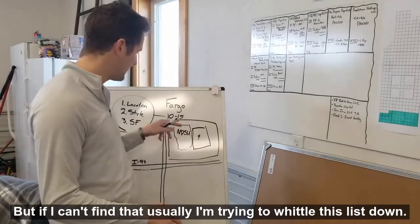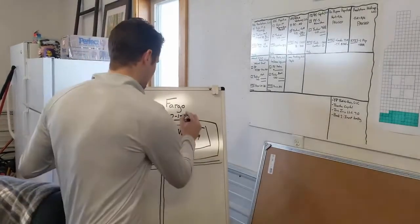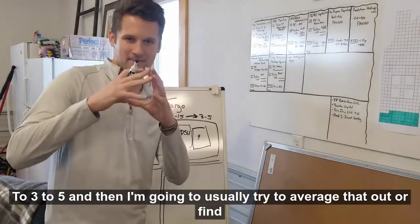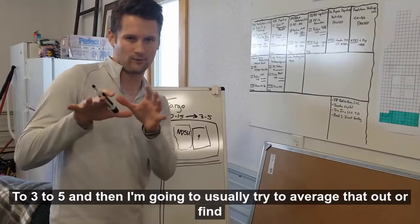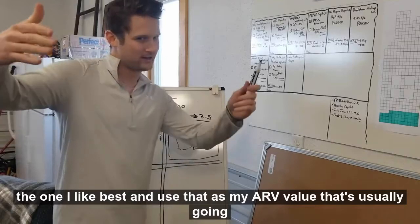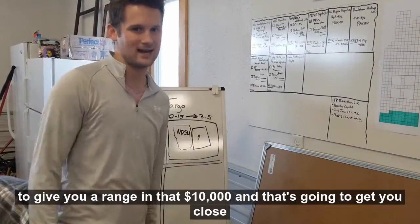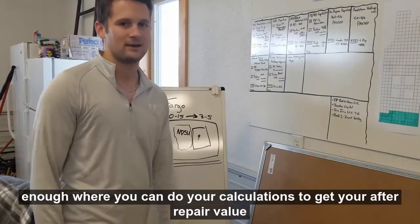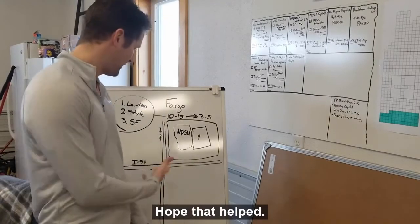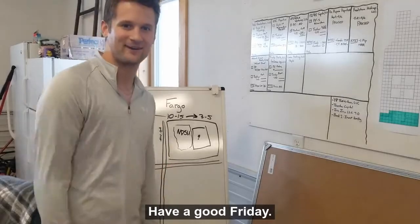But if I can't find that, usually I'm trying to whittle this list down to three to five. And then I'm going to usually try to average that out or find the one I like best and use that as my ARV value. That's usually going to give you a range in that $10,000, and that's going to get you close enough where you can do your calculations to get your after repair value with your ARV. Hope that helped, hope you like my drawings. Have a good Friday.